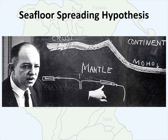The seafloor spreading hypothesis essentially states that new seafloor was developed at the ridges in the earth's crust, and the older seafloor was destroyed on the opposite side of the world at trenches. This holds to the law of conservation of energy and matter, which states that things on earth are neither created nor destroyed. The formation and destruction of this crust was due to magmatic convection going on in the asthenosphere in the mantle, which Hess had observed indirectly through the presence of volcanoes in the East Pacific Rise.